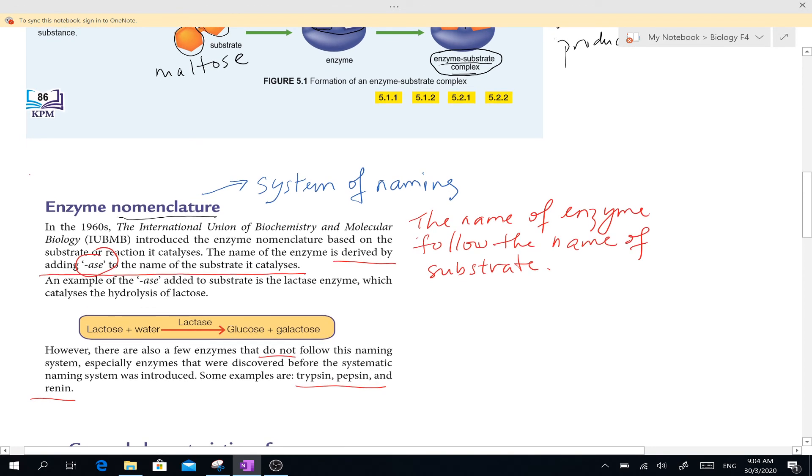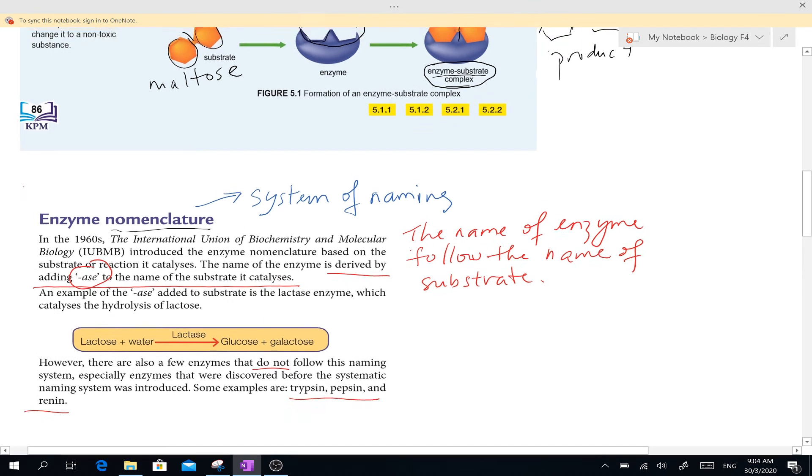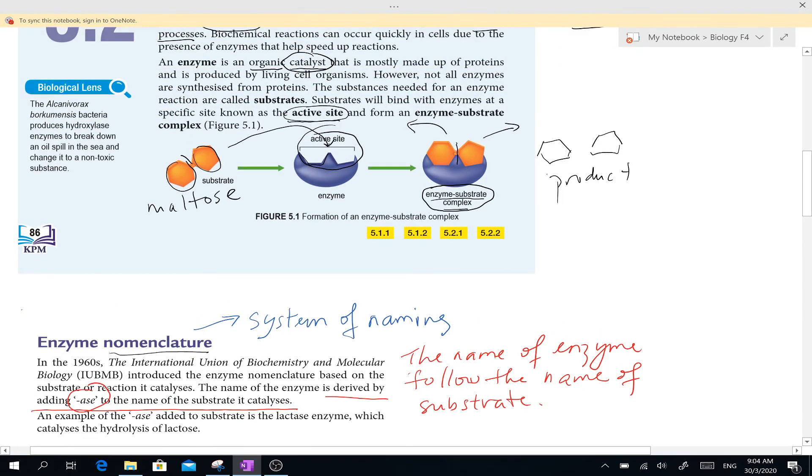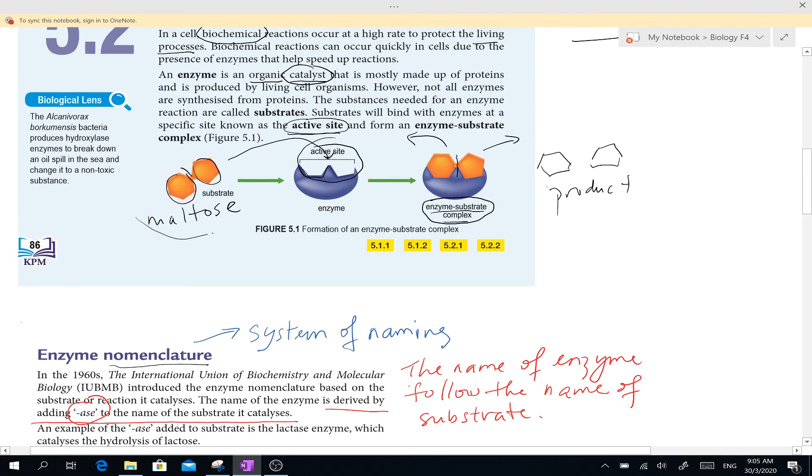They introduce a system to name your enzyme. Usually you look at the name of the enzyme follows the name of the substrate. Substrate is a substance that it wants to break down. For example, like say, remember this substrate, the maltose is a substrate. Maltose is a substrate.